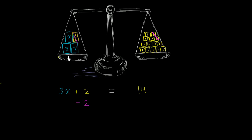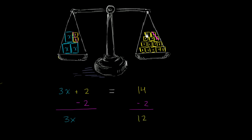Mathematically, what we're doing is subtracting two kilograms from each side. On the left hand side we now have 3x plus 2 minus 2, which leaves us with just 3x. On the right hand side, we had 14 and we took away 2, so we're left with 12 blocks. Since we removed the exact same amount from both sides, the scale is still balanced, and our equation is now 3x equals 12.